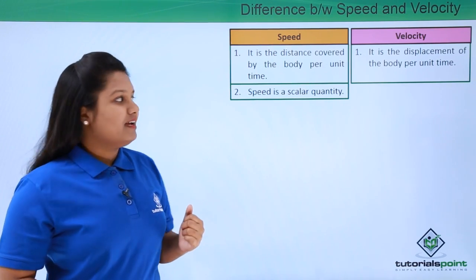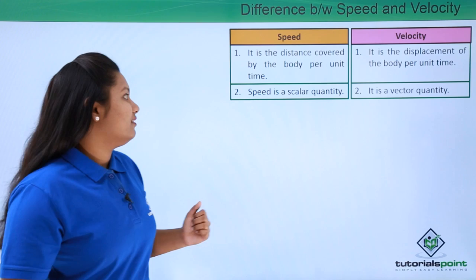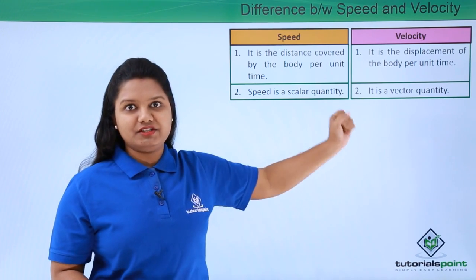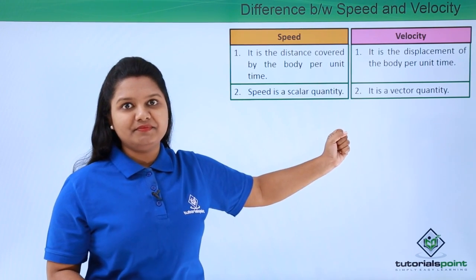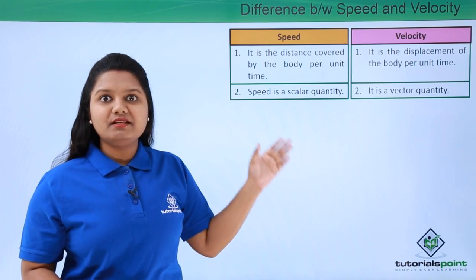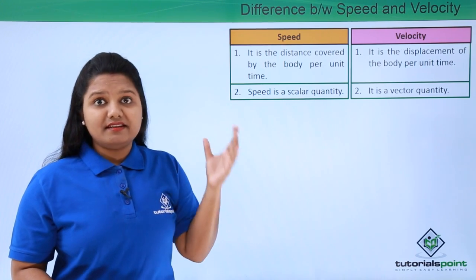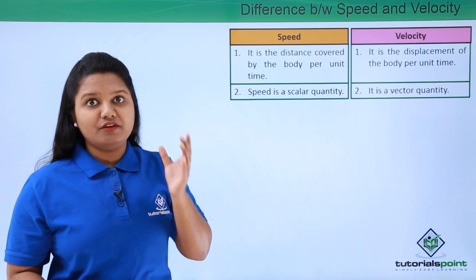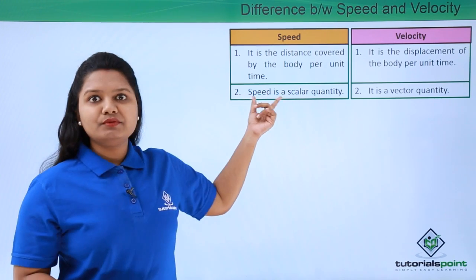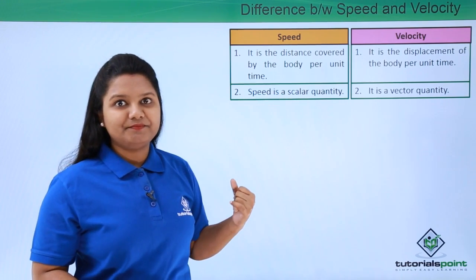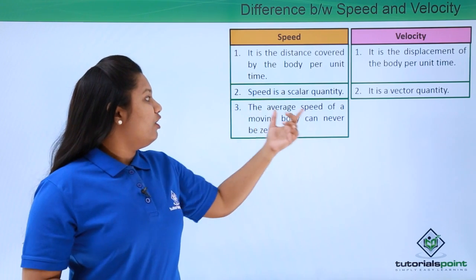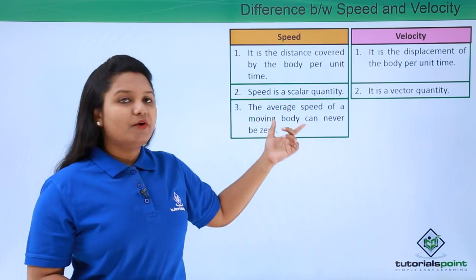Since velocity depends on displacement, which is a vector quantity, velocity also turns out to be a vector quantity. It deals with the magnitude as well as the direction of the body. Whenever we talk about velocity, we need to specify the magnitude as well as the direction of motion, but we don't have to do that in the case of speed.